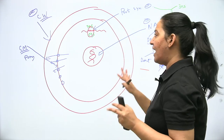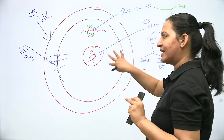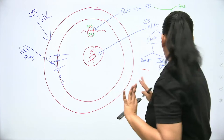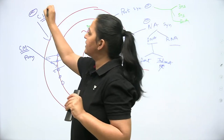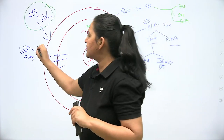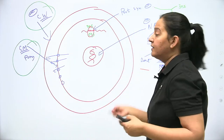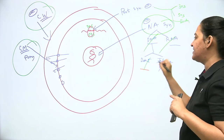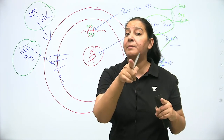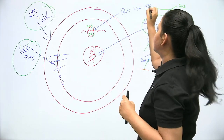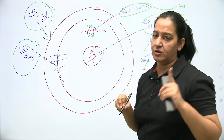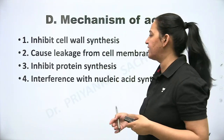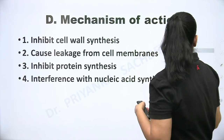To summarize the four mechanisms: some antibiotics inhibit cell wall synthesis; some cause pores in the cell membrane causing leakage; some inhibit nucleic acid synthesis (DNA or RNA, directly or indirectly if DNA); and some inhibit protein synthesis at the ribosome — acting on 30S, 50S, or both. That is the classification based on mechanism of action — four categories total.